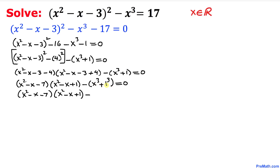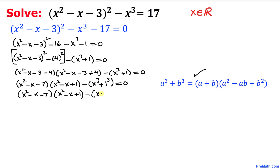We are going to use the formula a cubed plus b cubed, so therefore we can write this one as (x plus 1) times (x squared minus x plus 1), equal to 0.